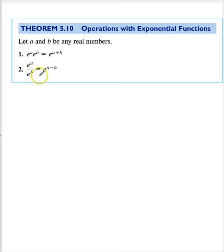And e to the a divided by e to the b is e to the a minus b. Let's think about this. If I have e to the a divided by e to the b, I can write this as e to the a times e to the minus b. Now, using the first rule, this is e to the a minus b.